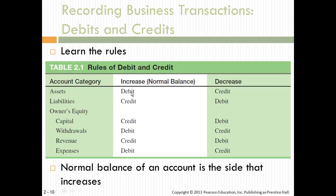Assets have a normal debit balance, so a debit will increase it and a credit will decrease it. Liabilities have a normal credit balance, which means an increase is a credit and a decrease is a debit. Your accounting equation always stays in balance, so owner's equity in total has a normal credit balance, whereas the pieces within have different balances. Revenue is a credit, expense is a debit, and a withdrawal is a debit.